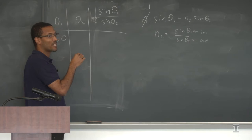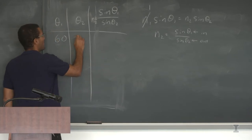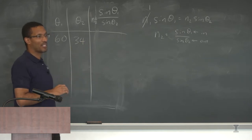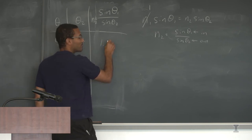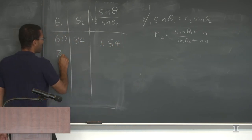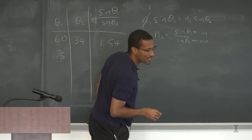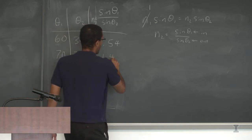One student measured 214 minus 180, giving theta two as 34 degrees. With 60 degrees in and 34 degrees out, calculating the ratio gives a result. For the example I did on the board — 70 degrees in and 39 degrees out — I got 1.49.